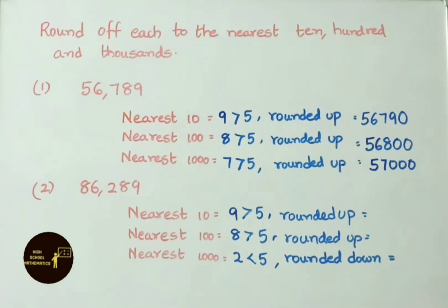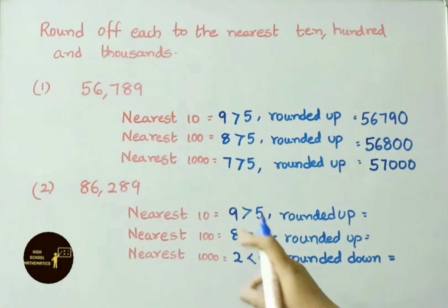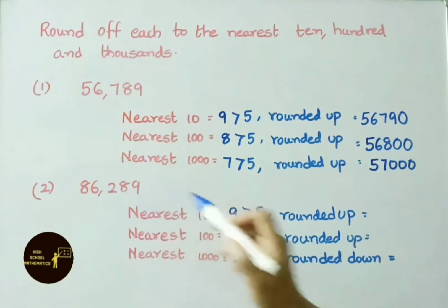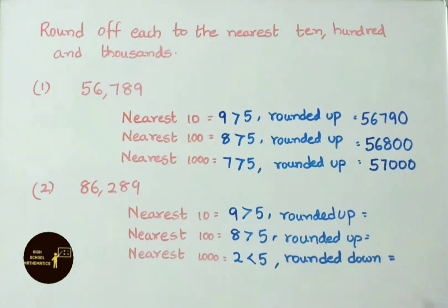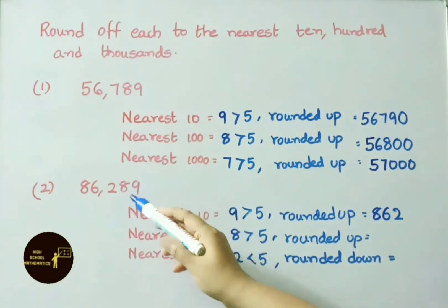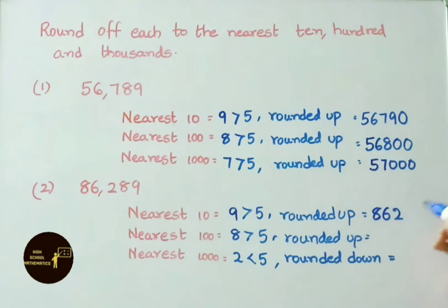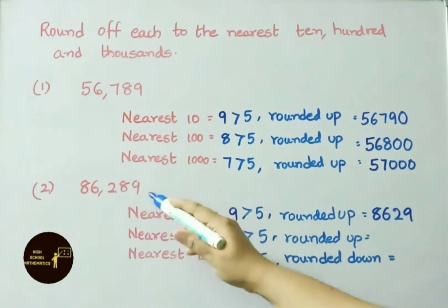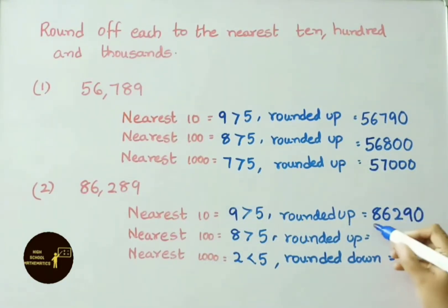Second number: 86,289. Nearest 10: the digit to the right of the 10s place is 9. Since 9 is greater than 5, we round up — write 86,2 as is, change 8 to the next digit 9, and put 0 in place of 9. So our answer is 86,290.